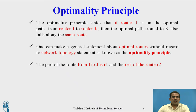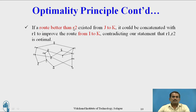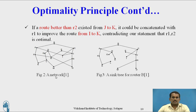The part of the route from I to J is r1 and the rest of the route is r2. If a route better than r2 existed from J to K, it could be concatenated with r1 to improve the route from I to K, contradicting our statement that r1 and r2 are optimal. Two diagrams illustrate this with a simple network containing nodes labeled a, b, c, d and others.